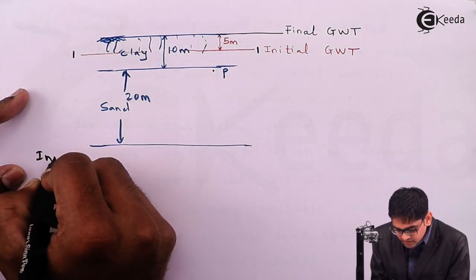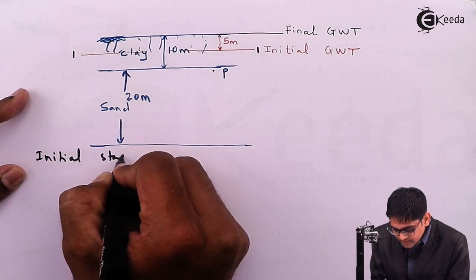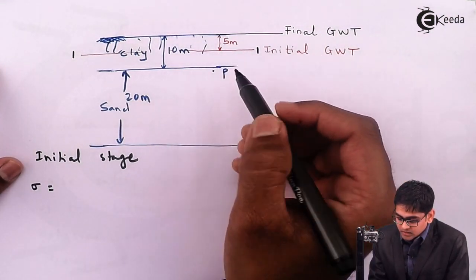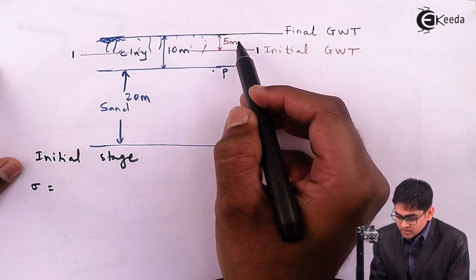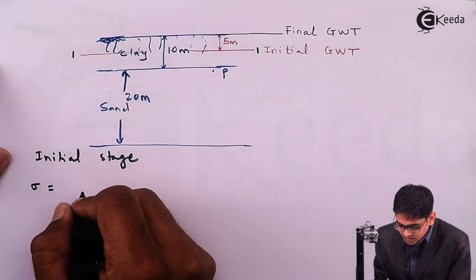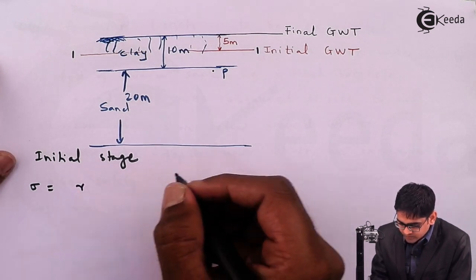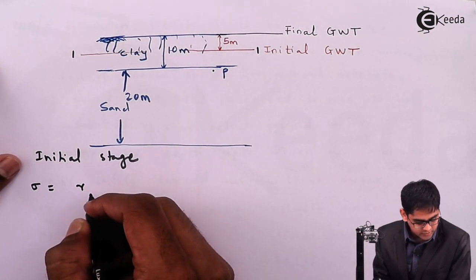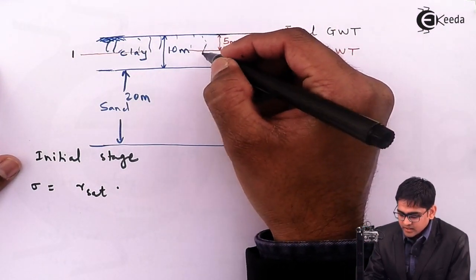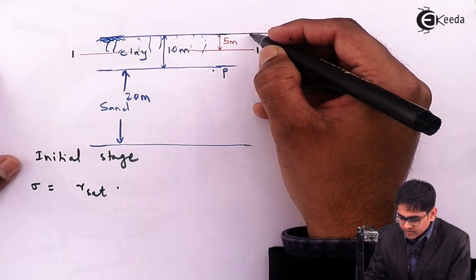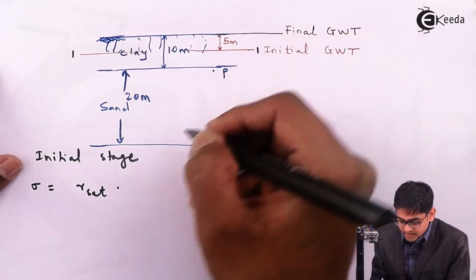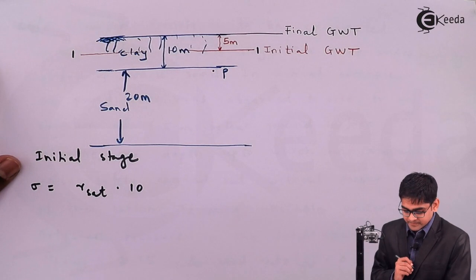At the initial stage, total stress σ equals the contribution from the clay. Since the soil above the water table is capillary saturated, we use γ_saturated for the entire 10 meters. So σ = γ_saturated × 5 (below GWT) + γ_saturated × 5 (capillary zone) = γ_saturated × 10. This is the total stress.